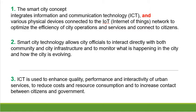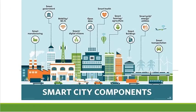Let's look at a picture that will help us understand what we have discussed. In a smart city, every facility and every component will be smart — smart manufacturing, smart government, mobility and Wi-Fi, smart digital citizens, open data, smart health, smart transportation, smart farming and agriculture, smart buildings, smart grids, smart plants, smart energy, and smart utilities. Everything will be digital and connected to the latest technologies.